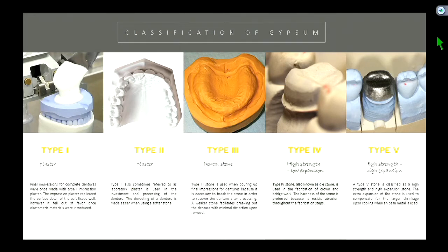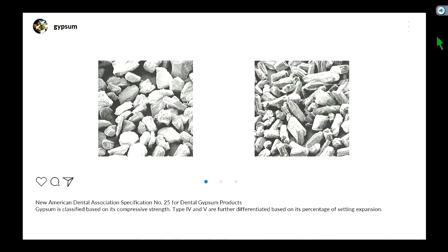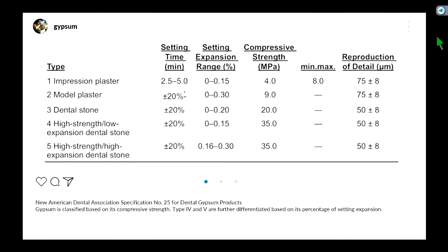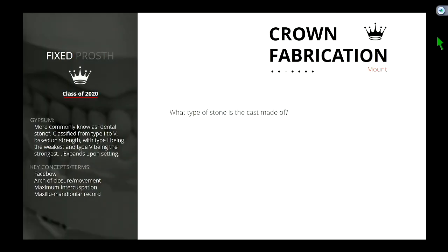Now there's a difference between type 4 and type 5. Going back to the chart, they have the same compressive strength, but one is labeled low expansion and the other high expansion. Type 4 is low expansion, type 5 is high expansion, but they have the same compressive strength. So the question is: when would you rather use low expansion versus high expansion?